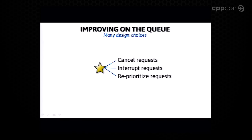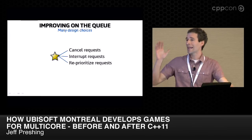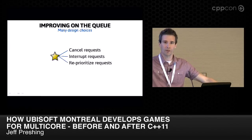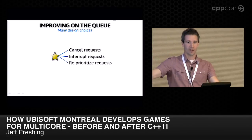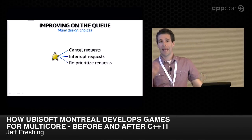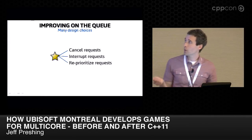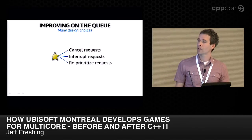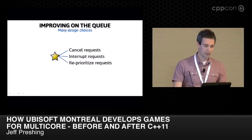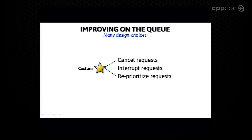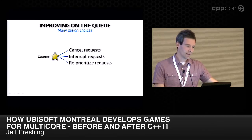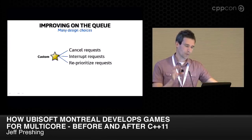A queue is nice, but often in games we can do better. If the player starts heading in one direction, triggering a request to load that area, they might do a 180 before it actually loads — so it might not be the best candidate anymore. We want a way to cancel requests, interrupt requests in flight, and reprioritize as they're pulled out. Technically that's not a queue anymore — it's some other custom concurrent object. This comes up often in game programming. There are very few off-the-shelf concurrent objects we can just plug in; what the object does is usually very specific to the problem being solved.